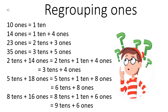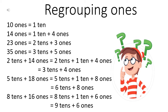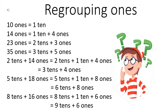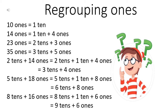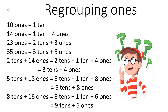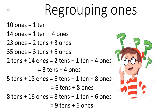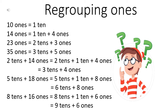Same way, if you have five tens and eighteen ones, you will get five tens plus one ten plus eight ones. Eighteen ones will be regrouped as one ten and eight ones. So five tens and one ten make six tens and eight ones. Now suppose you have eight tens and sixteen ones — sixteen ones will be regrouped as one ten plus six ones. So you have eight tens plus one ten, that is equal to nine tens plus six ones.